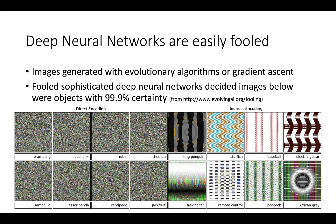It turns out that deep neural networks — the more sophisticated neural networks used in things like Google Search, Google Translate, and image recognition — are actually quite easily fooled. These are pictures generated through a process called evolutionary algorithms, which get neural networks to recognize random images as all sorts of animals and objects: king penguins, jackfruit, armadillos, lesser panda, and so on.